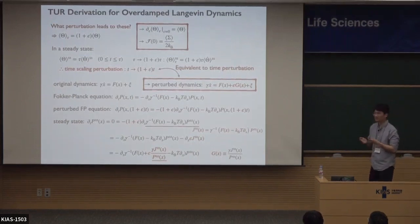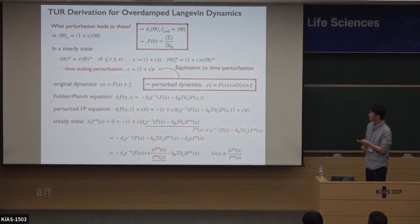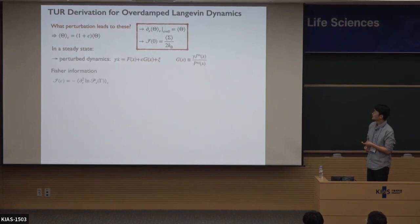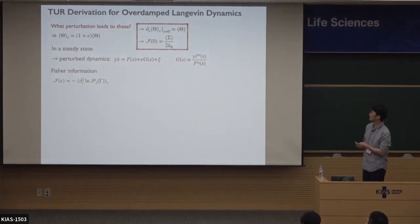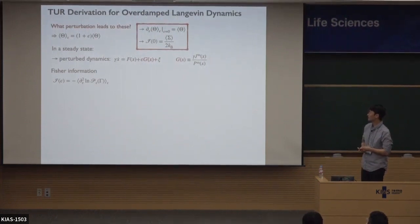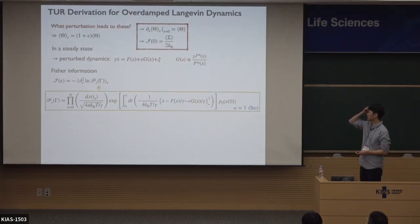We can rewrite this term: the first part comes from the (1) factor, and the second part from the epsilon factor, by definition of the probability current. Inserting this into the expression, we can write the equation in a compact form. Now let's define this function as G(X) — note that the term in the brackets has a specific form. This Fokker-Planck equation in steady state corresponds to a Langevin dynamics with perturbation force epsilon times G(X). This means the time-scaling perturbation is equivalent to this perturbative dynamics in the steady state.